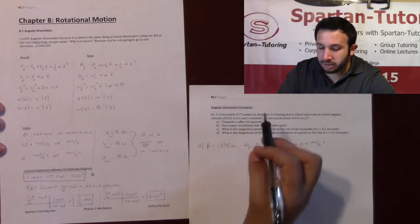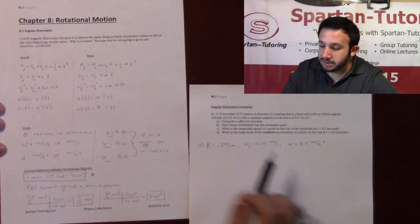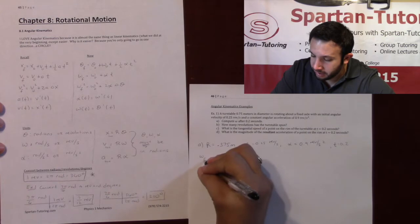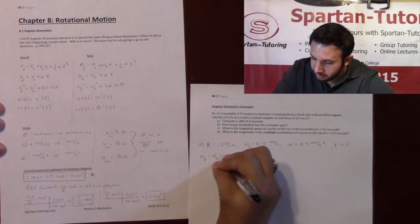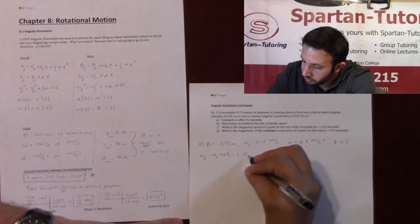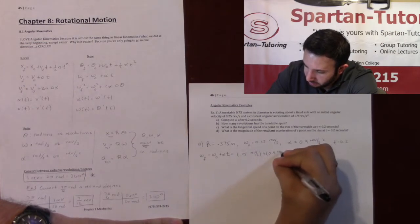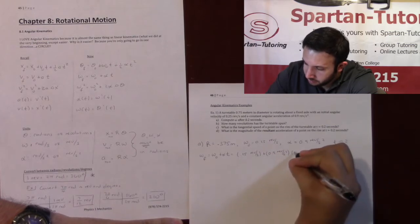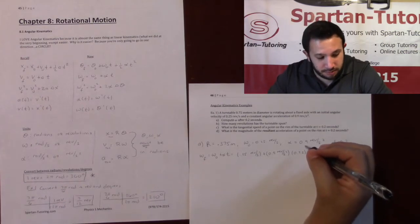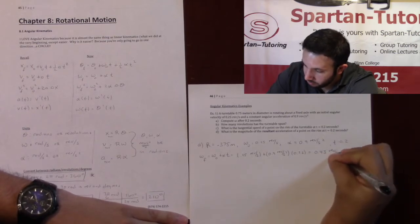Part A: compute omega after t = 0.2 seconds. I'm given omega_0, alpha, and t, so I use omega_f = omega_0 + alpha·t. That's 0.25 rev/s plus 0.9 rev/s² times 0.2 s, which gives omega_f = 0.43 revolutions per second.